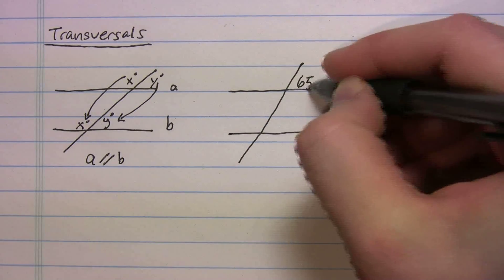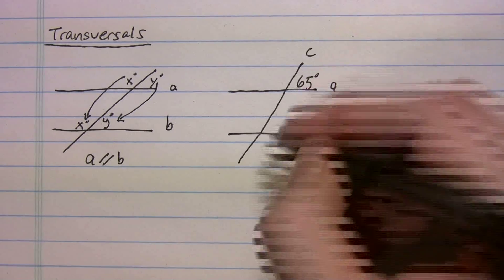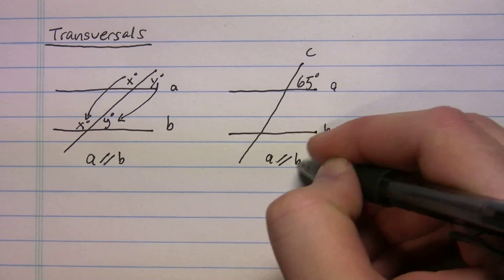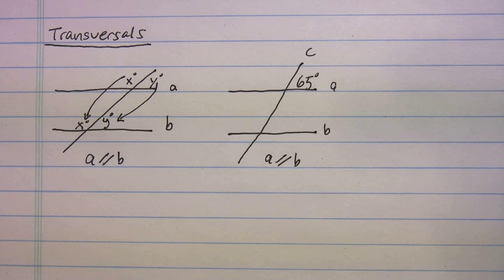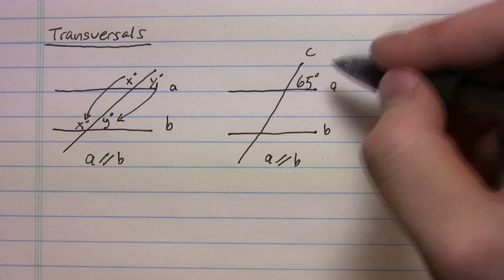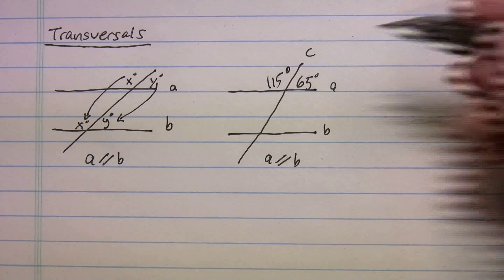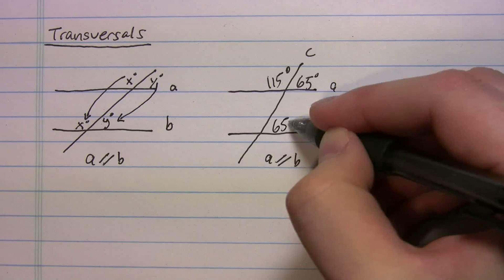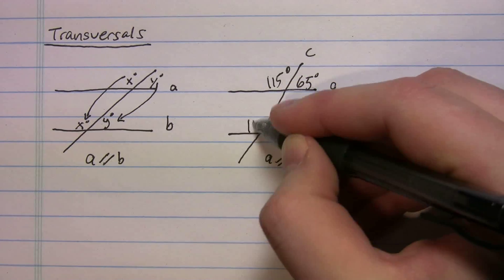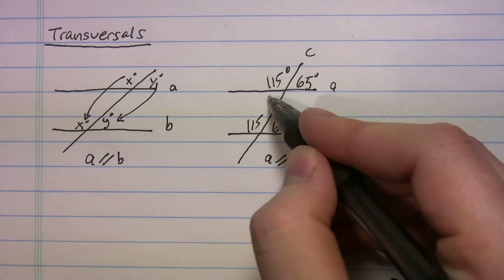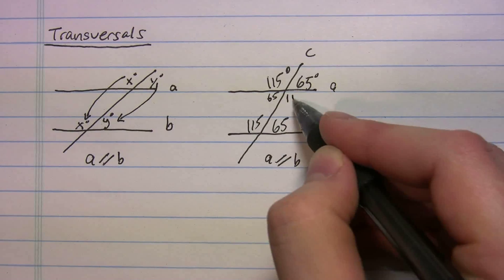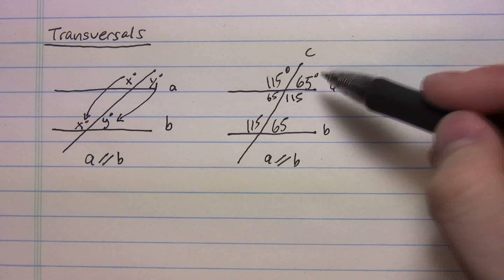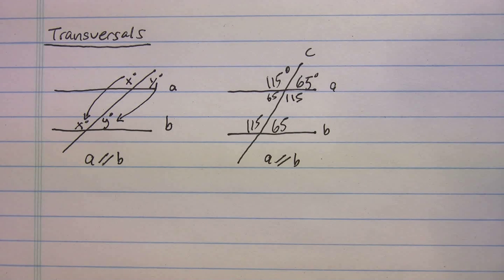Quick example: if a is parallel to b and one angle is 65°, you can fill in the rest. The adjacent angle on that line is 115°, since 65 plus 115 equals 180. Then 65 slides down to its corresponding position on the other parallel line, 115 slides down too, and you can fill in the rest using vertical angles — 65, 115, 65, 115.